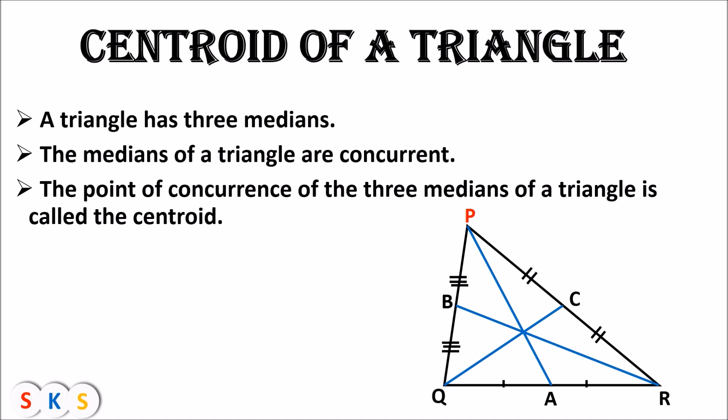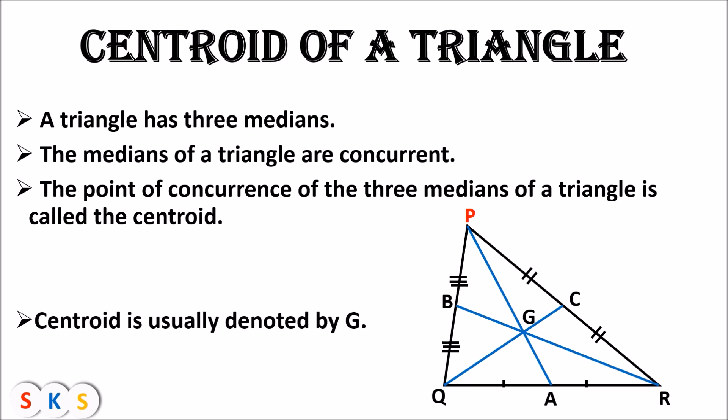You can see that all three medians meet each other at a single point, and that point is called the centroid of a triangle. We usually denote the centroid with the letter G. So the centroid is the point where all three medians meet each other.